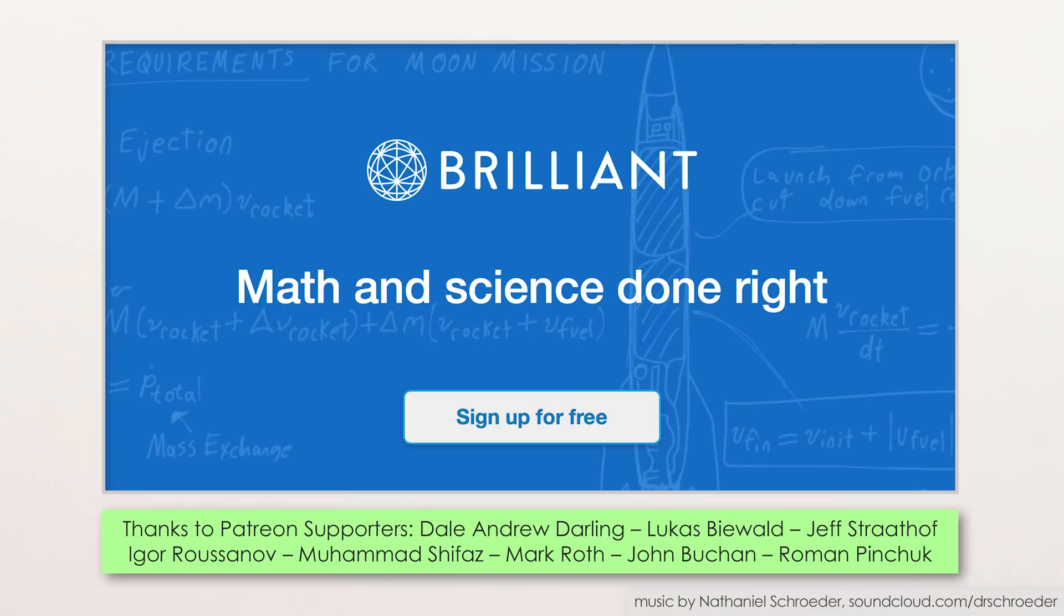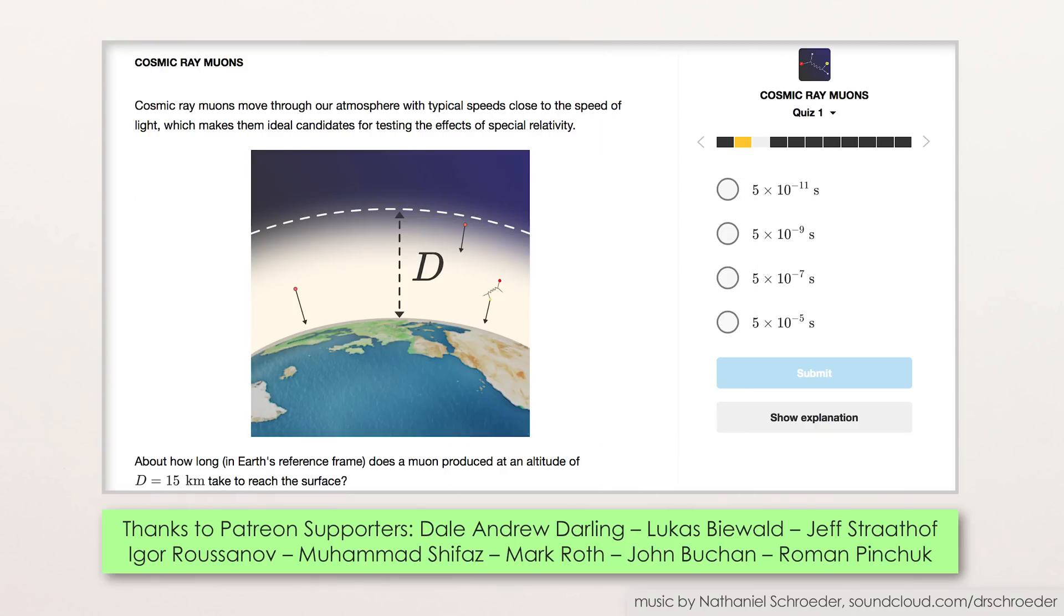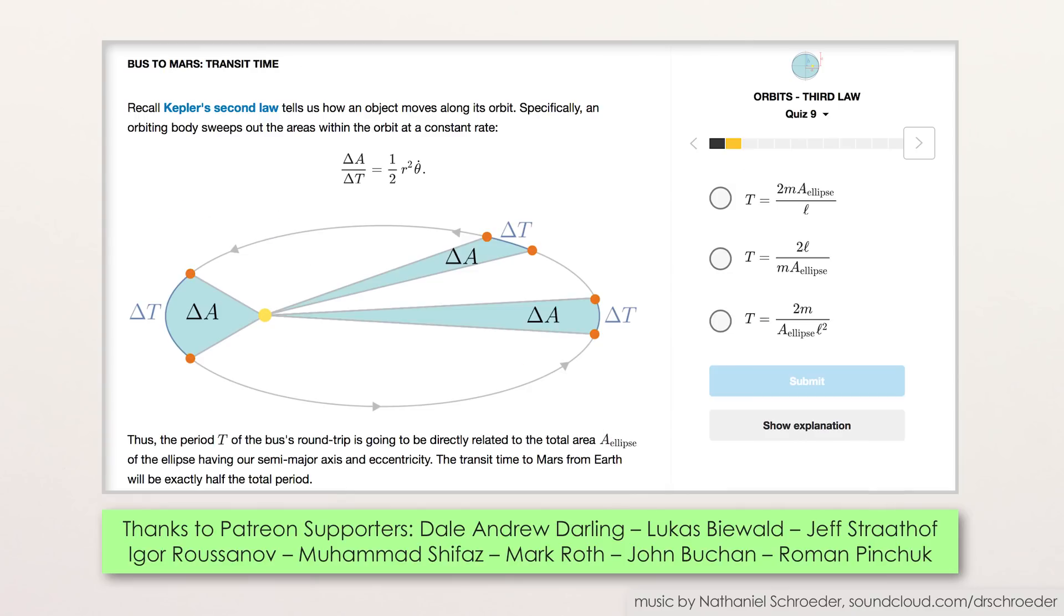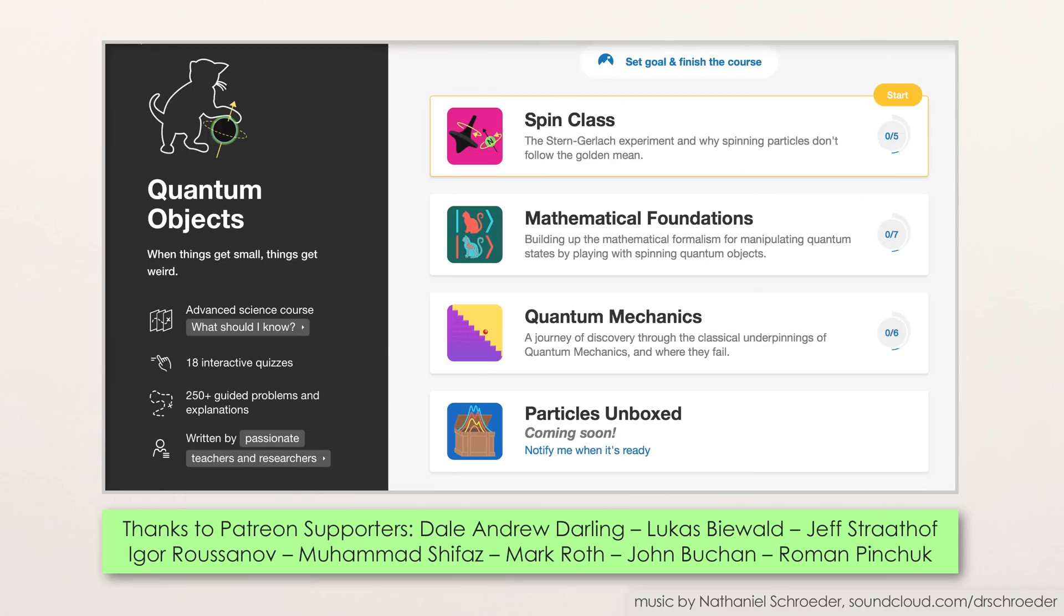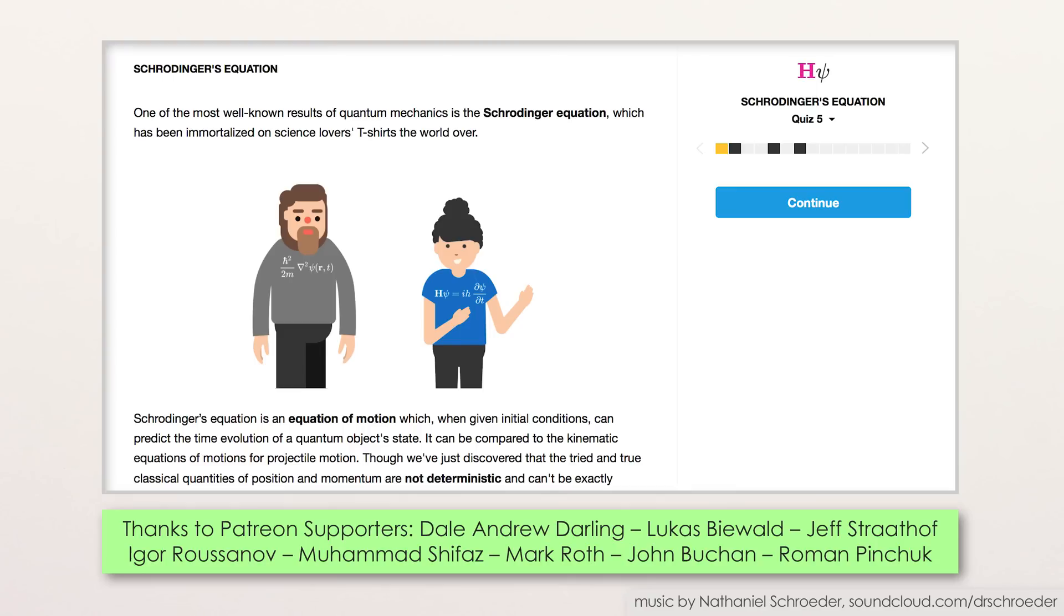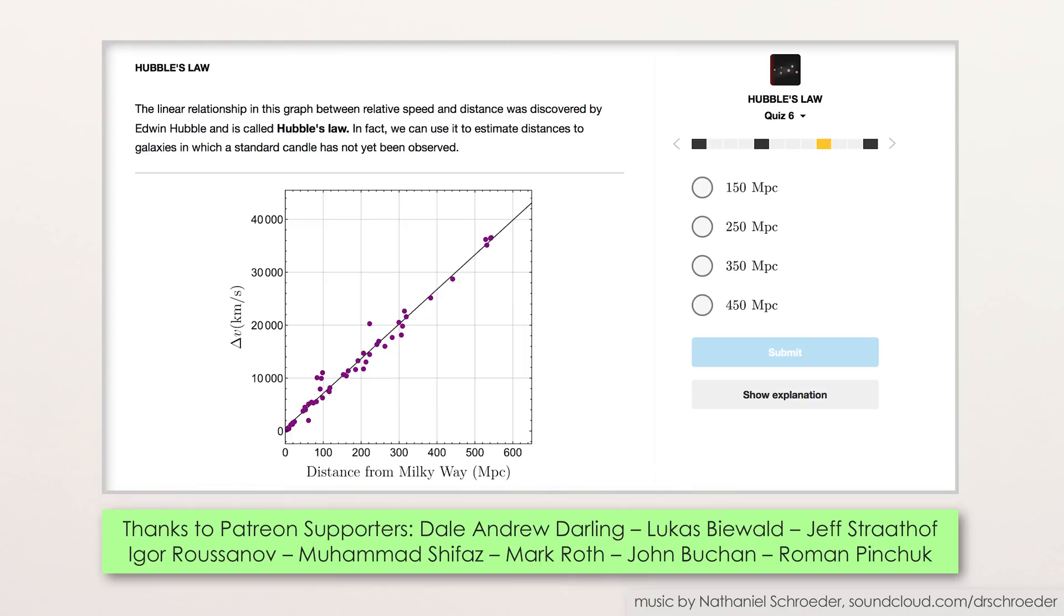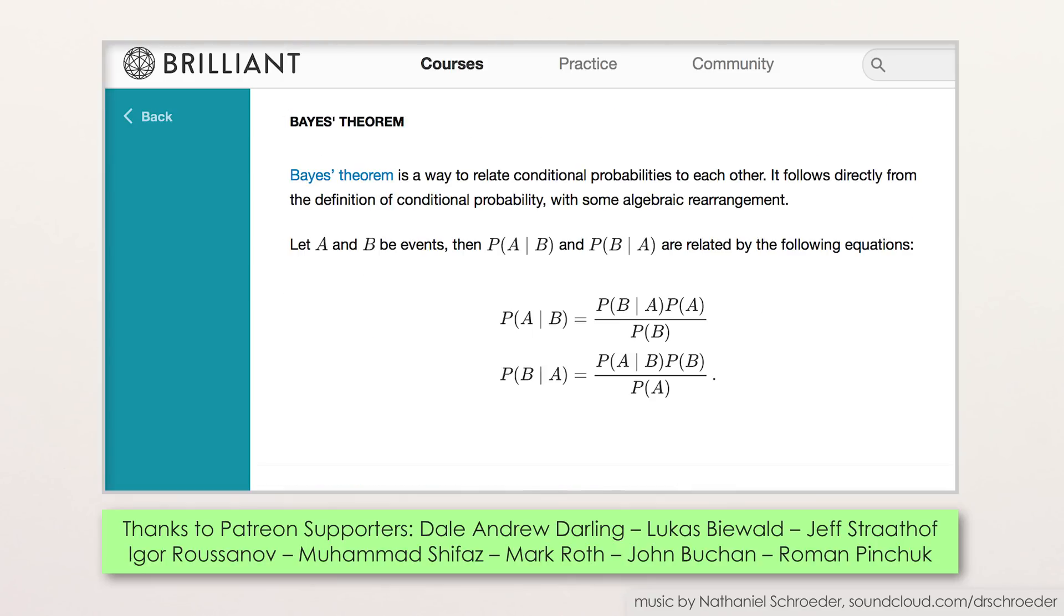And Brilliant.org, this video's sponsor, is a great place to learn about not just the details of time dilation and length contraction, but many of the other amazing equations that describe our universe. Like, they have a course that leads you towards understanding the Schrodinger equation of quantum mechanics, and one on Hubble's law in astronomy, and the famous Bayes' theorem of probability and statistics.